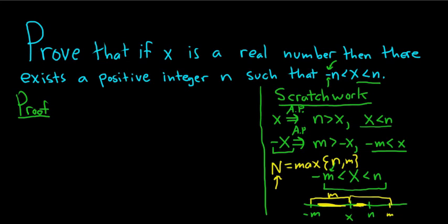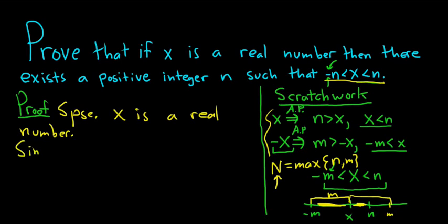So it says if x is a real number. So we'll start by assuming that. So suppose x is a real number. And now it'll all come to clarity hopefully after we do this. And we have to show the existence of a positive integer such that this is true. We decided that if we take the bigger of these two it will work. So first we have to go through this whole procedure again. So since x is a real number, so x is in the set of real numbers.